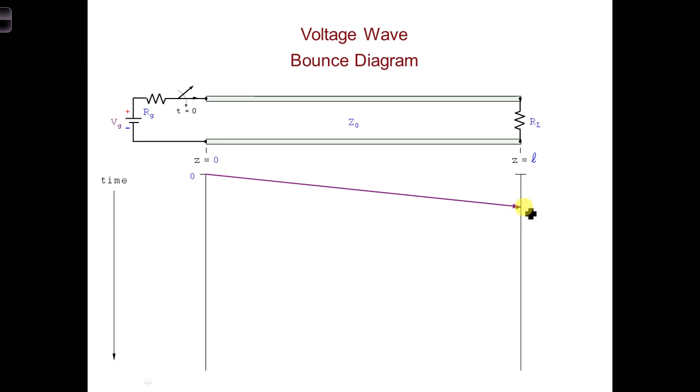Let's say it takes capital T seconds for the wave to propagate down the transmission line. Then we can label the point where the V1 plus line meets the Z equals L line with a capital T, like we did here.